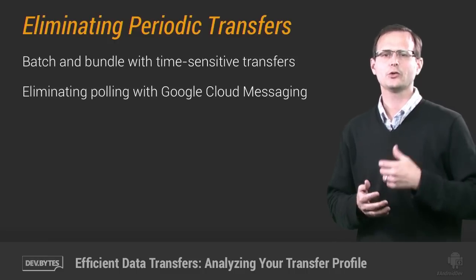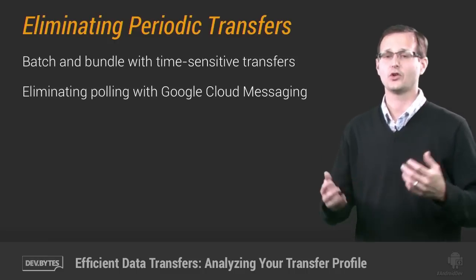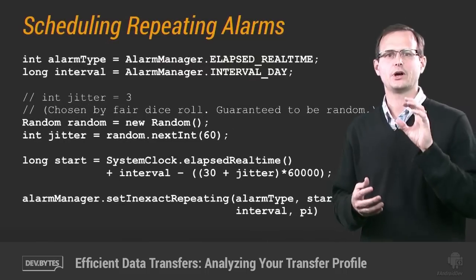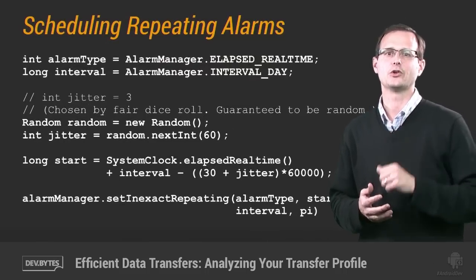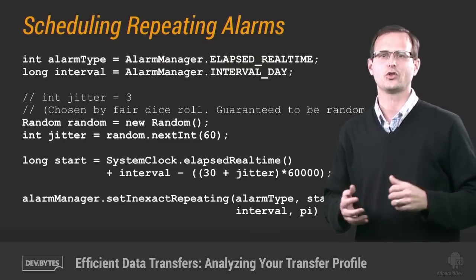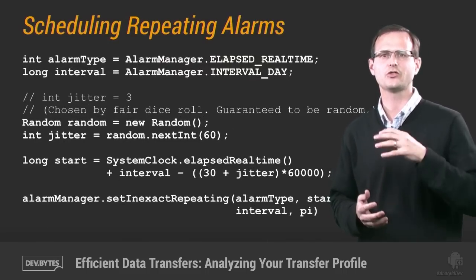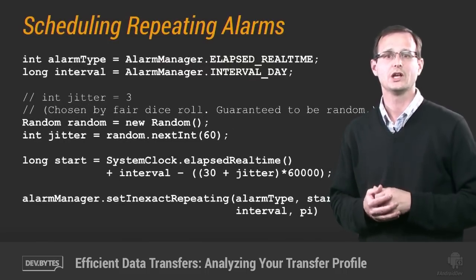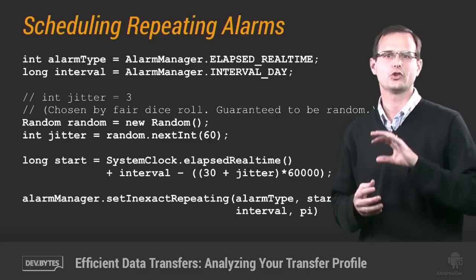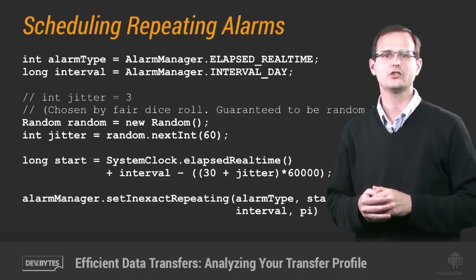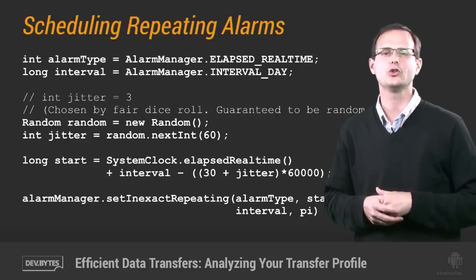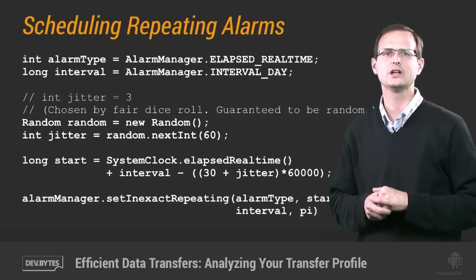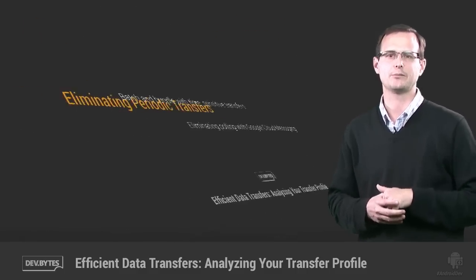But where a repeating alarm is the only thing that will work, you can try and optimize that by randomizing the periodicity, as shown here. Make the frequency as low as possible. If you're polling your server to check for updates, you should do everything in your power to replace client-side polling with Google Cloud Messaging.